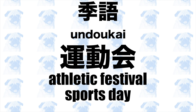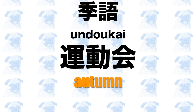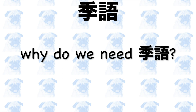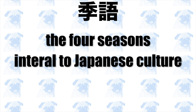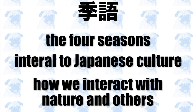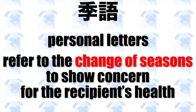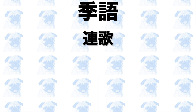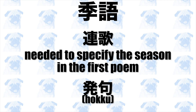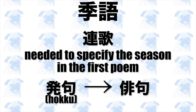For example, undokai — an athletic festival or sports day at school — is a kigo of autumn because undokai used to be commonly held in autumn. You might be wondering why kigo is even necessary, but the four distinct seasons of Japan are integral to Japanese culture and how Japanese people have traditionally interacted with nature and other individuals. In traditional Japanese poetry and literature, seasons are almost always mentioned or at least implied. Even in personal letters, it is customary to refer to the change of seasons at the beginning as a greeting and as a way of expressing concern for the recipient's health. In renga, the norm was to specify the season in the first poem, or hokku, and given that haiku originated from hokku, it is easy to imagine why this rule was also applied to haiku and why it remains to this day.